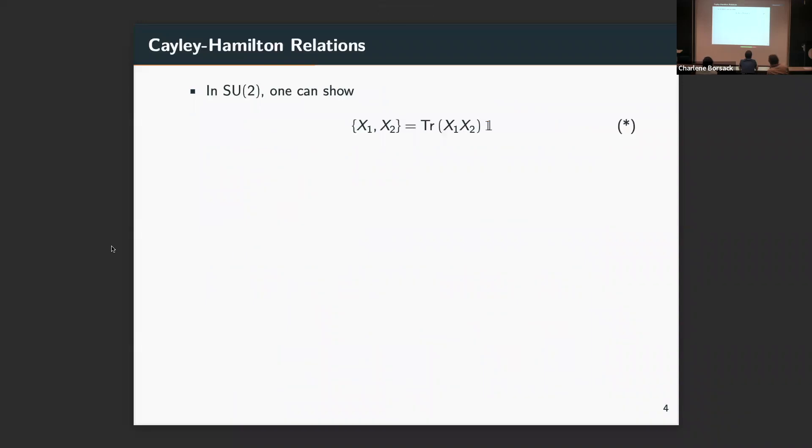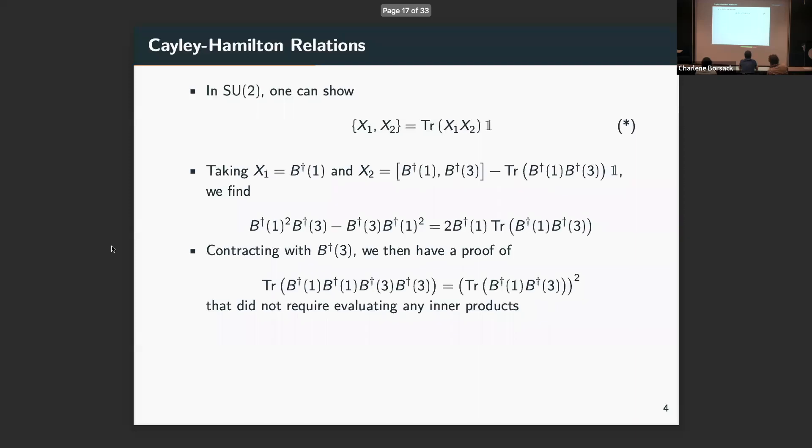Let me give you an example of how we can do this without computing inner products. In SU(2), in the Lie algebra, you can show that if you anticommute two elements, you'll get their trace times the identity. If we select these X1 and X2 carefully, taking X1 to be one of our creation operators and X2 to be some combination that still lives in the algebra, we'll find some relation among these operators. And then if we contract it with some other operators to get gauge-invariant combinations, we actually chose these carefully such that we'd find exactly the relation we wanted, that those two gauge-invariant operators were equal.